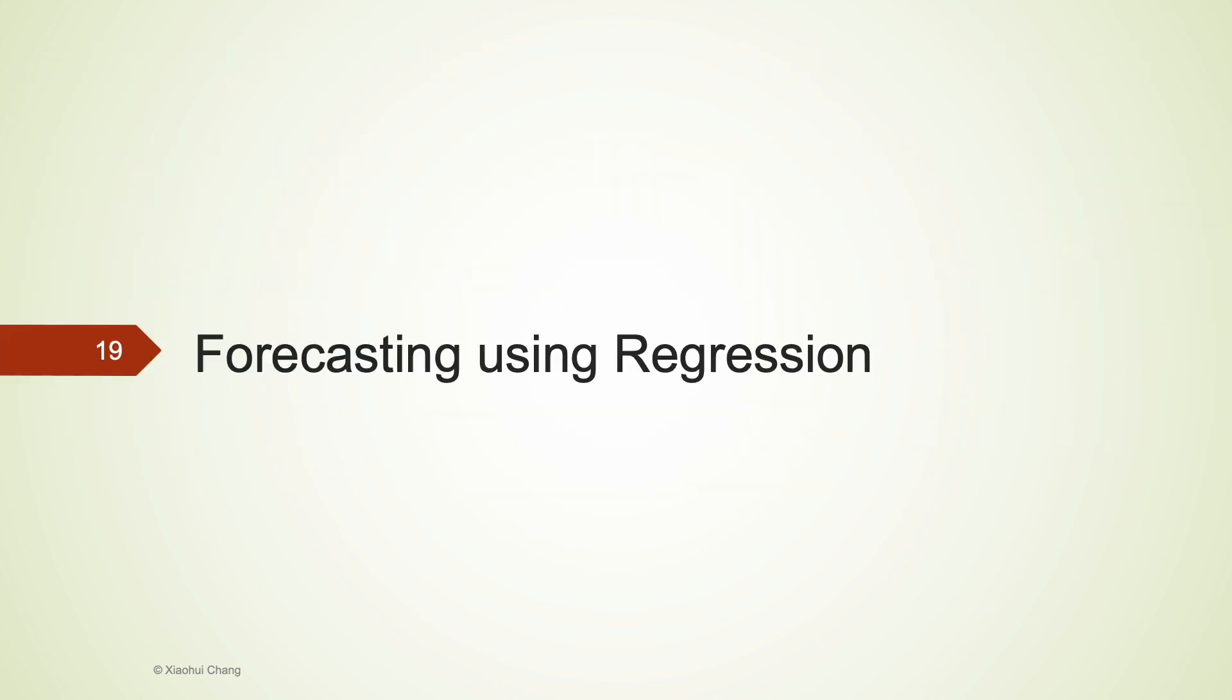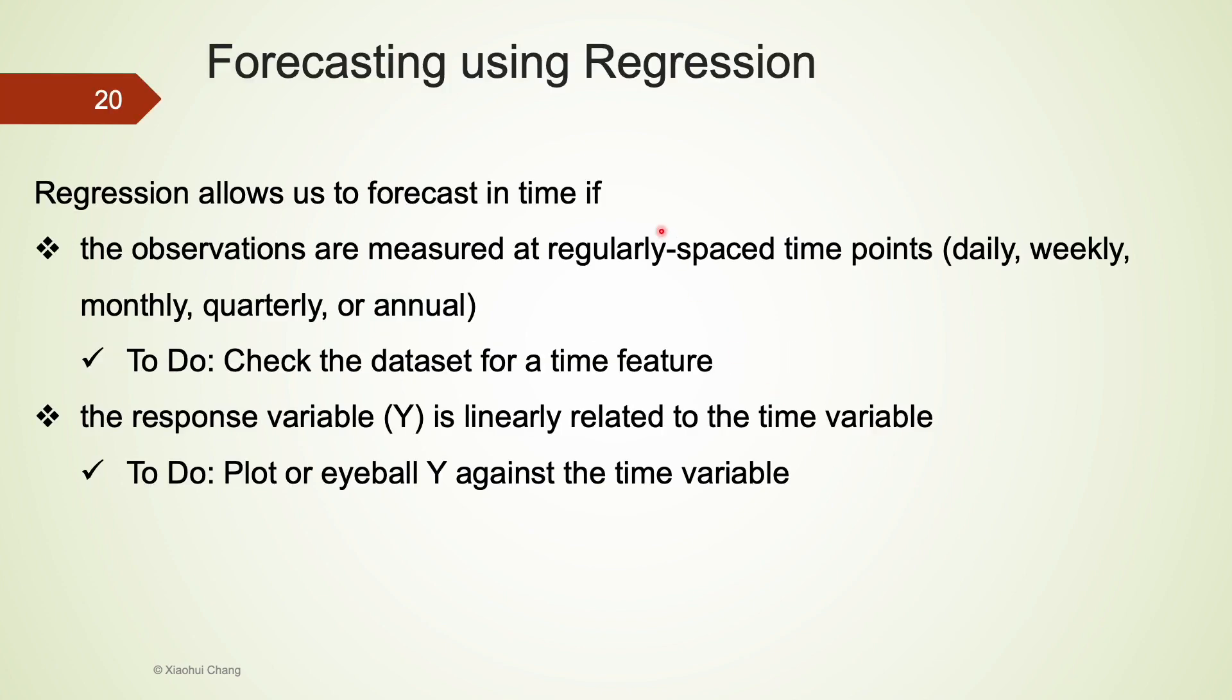For the remaining of the video, we will discuss how we can use linear regression for forecasting. We can use regression to forecast in time if the following conditions are satisfied. First, the observations are measured at regularly spaced time points. The data could be daily data, weekly, monthly, quarterly, or annual observations. We should be able to check the data has a time feature in it. Next, we also need a response variable to be linearly related to this time variable. This can be done by plotting or eyeballing.